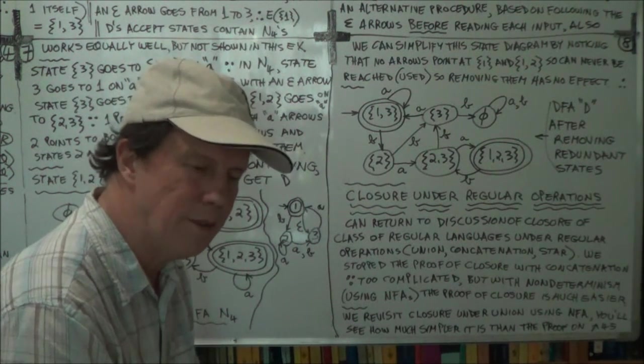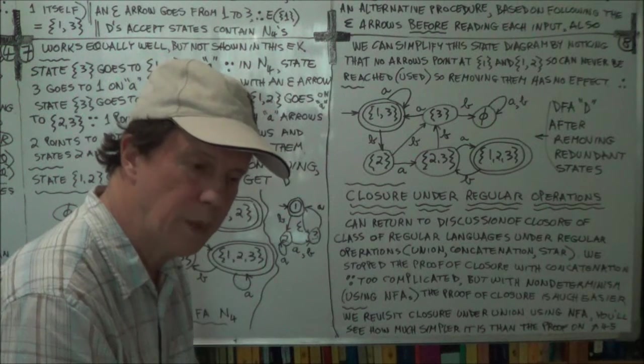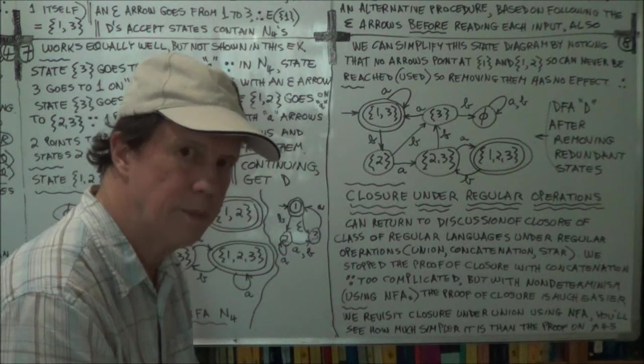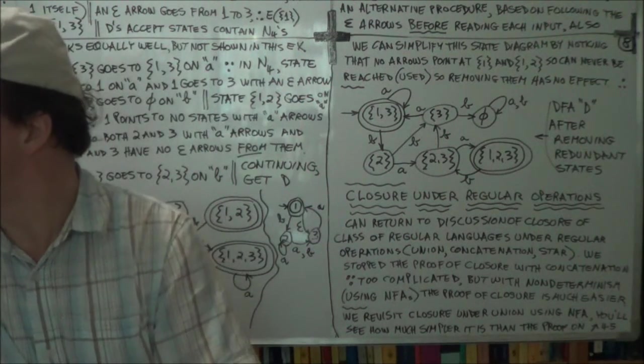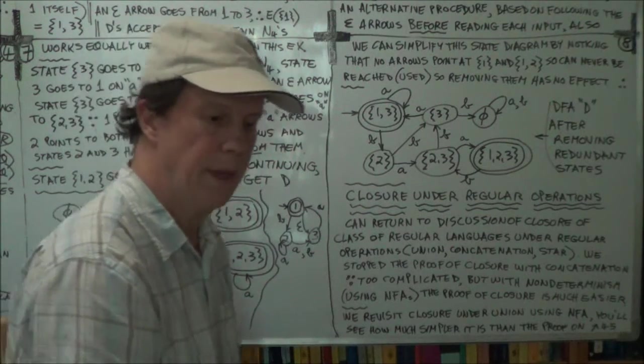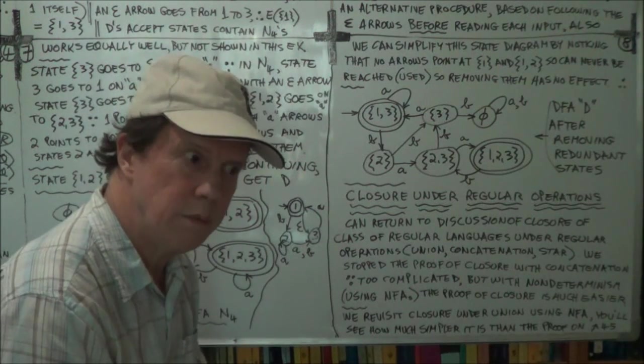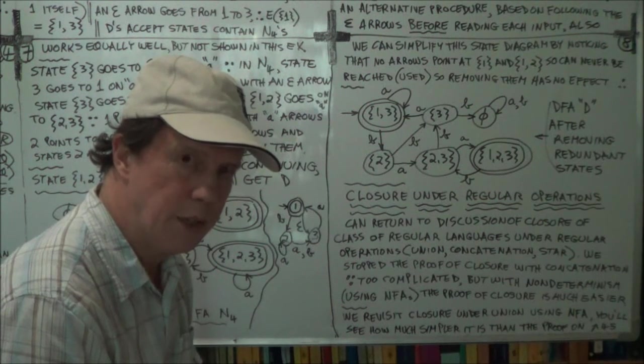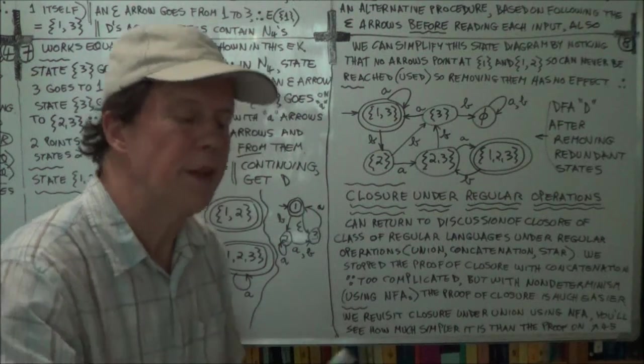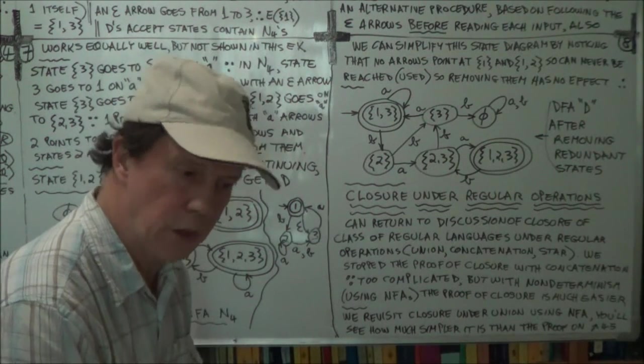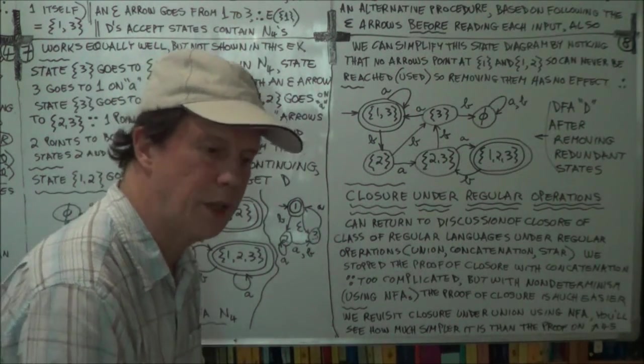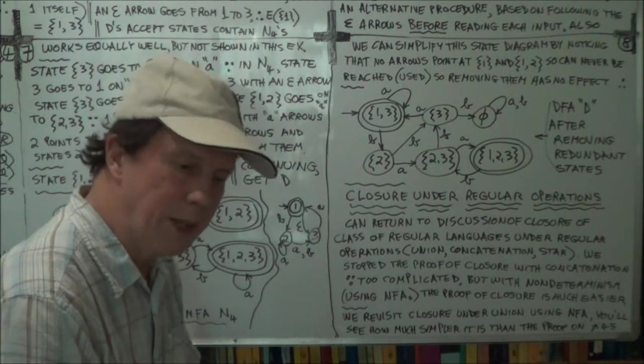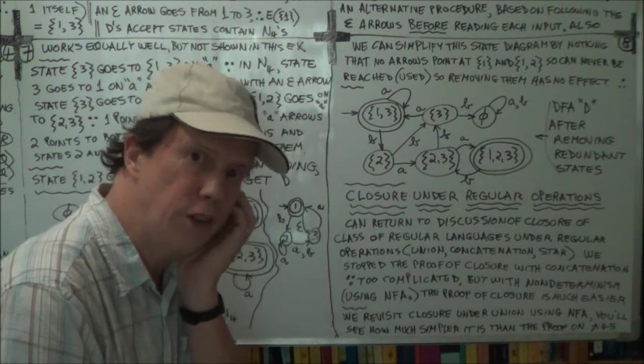The states of the equivalent DFA were, in fact, ordered pairs. So your Q dashed in your equivalent DFA would be a Cartesian product. Anyway, so we've actually got proof for the closure under regular operation union. So we'll go back to that, but this time we'll use techniques involving non-determinism.